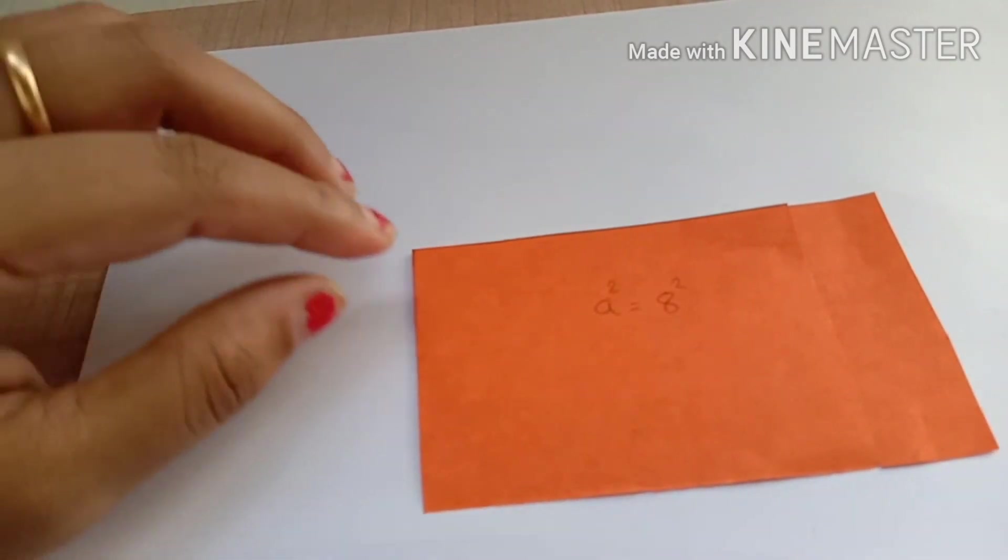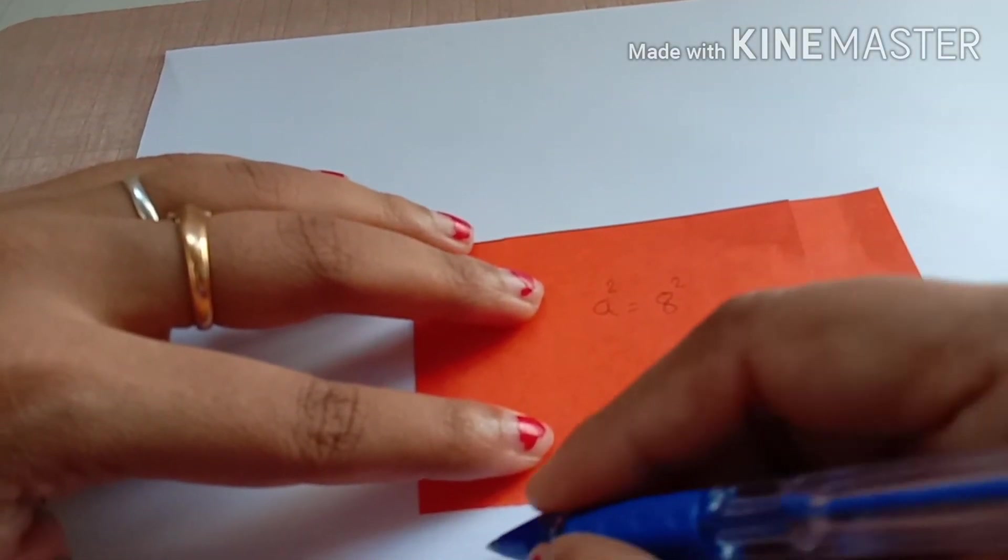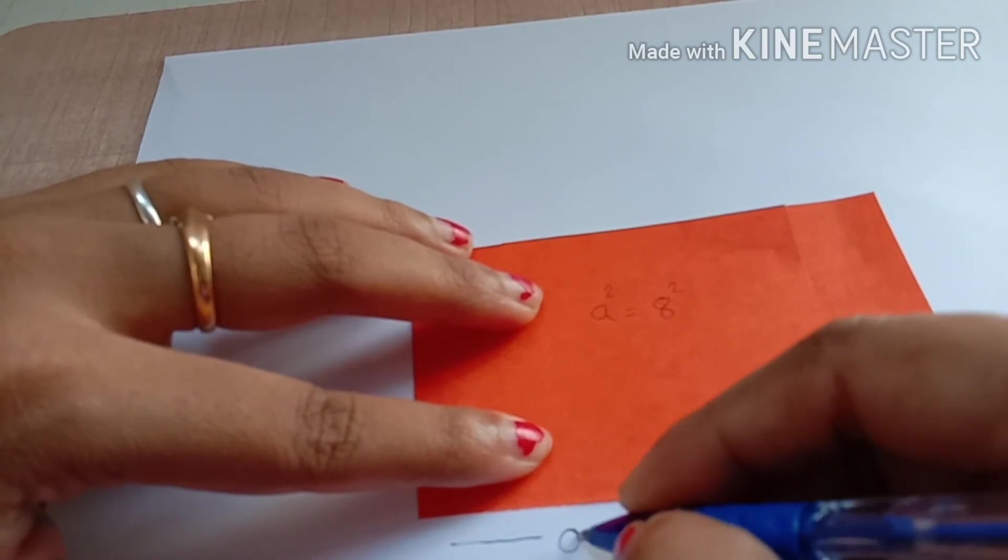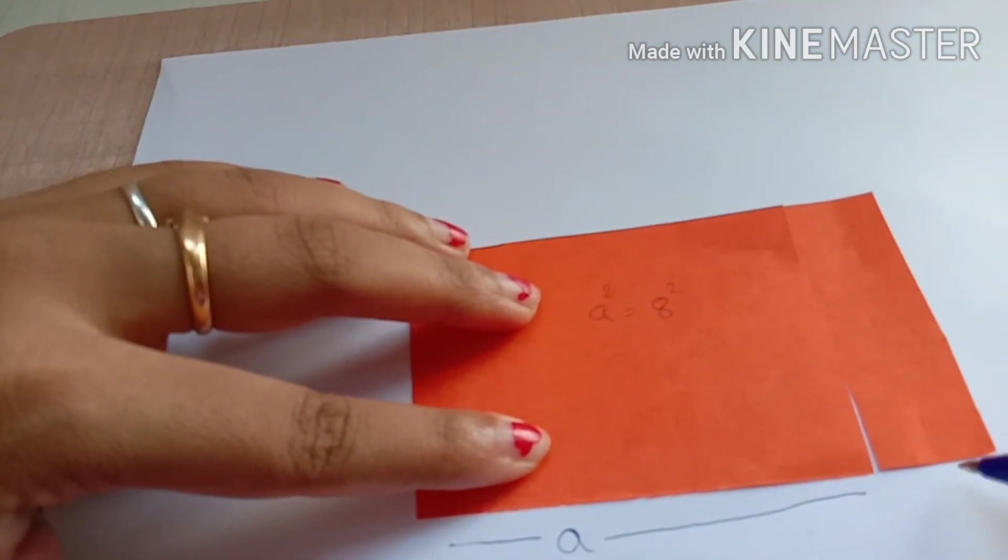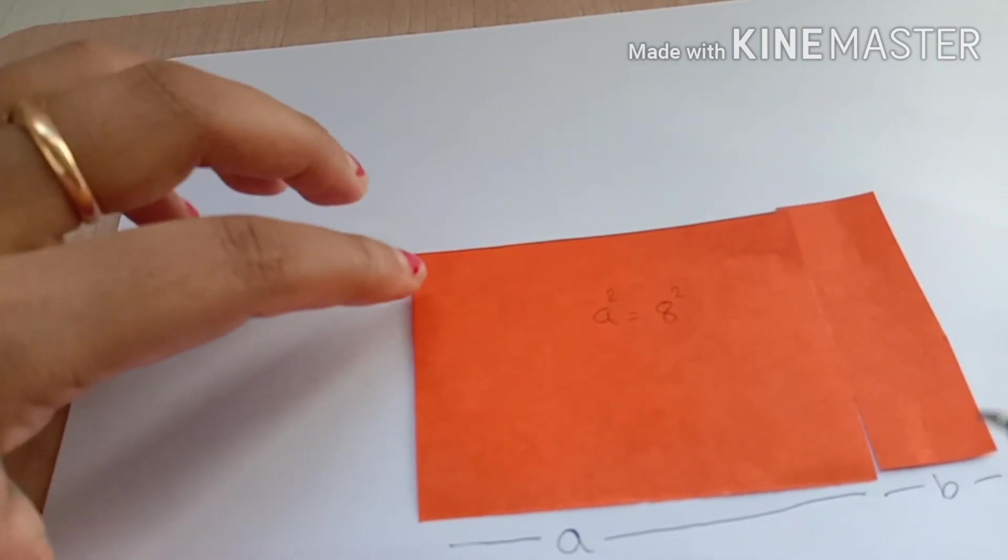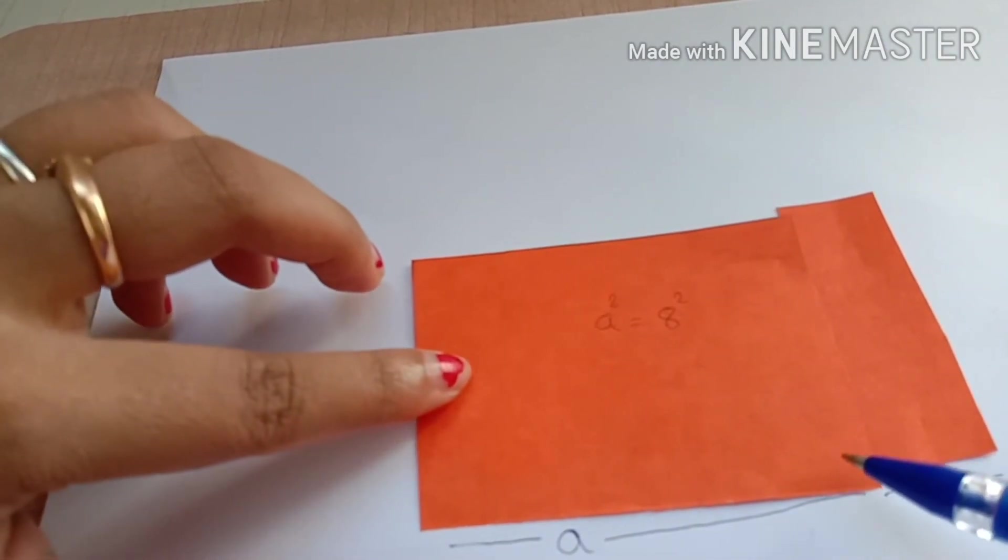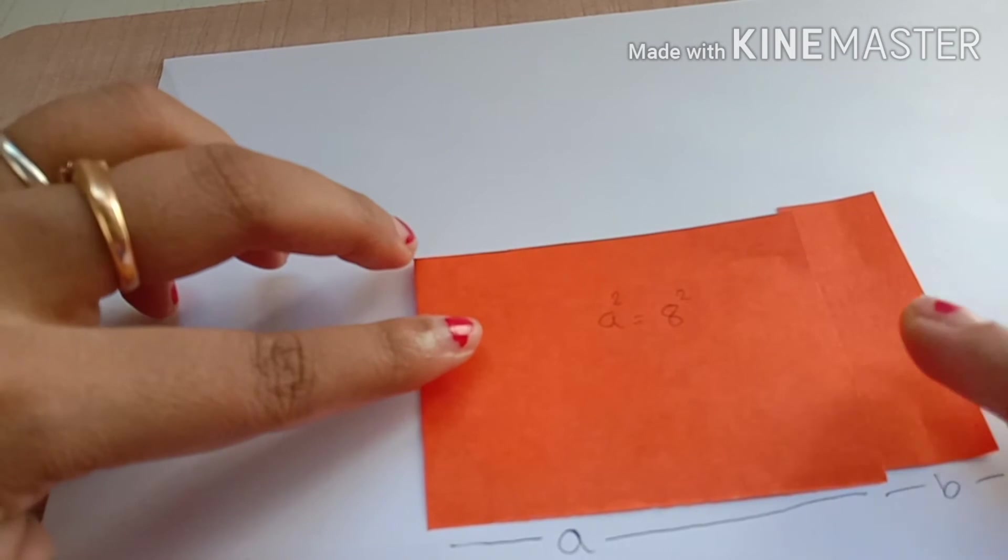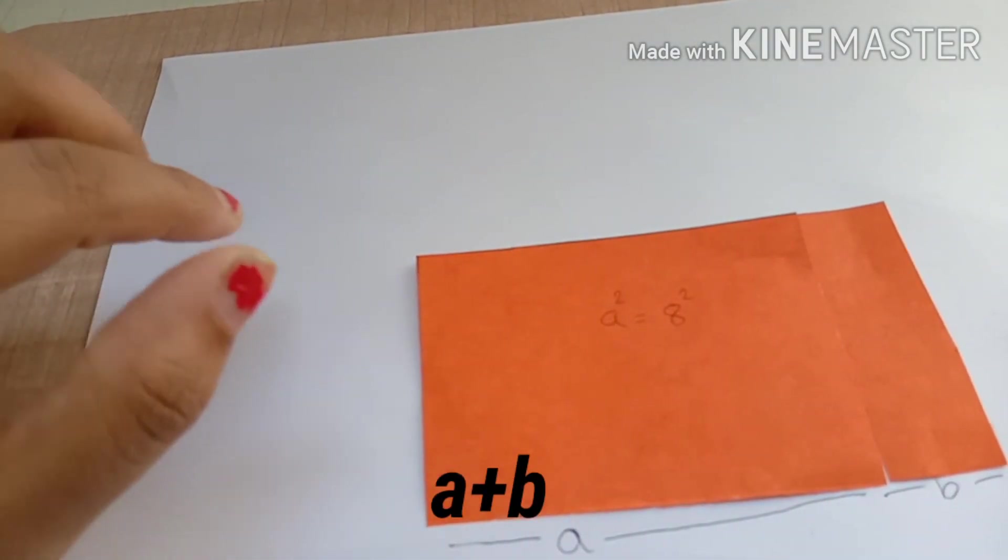And if you measure it, this will be a, this will be b, that is a plus b. It is 8 centimeters and it is 2 centimeters, a plus b.